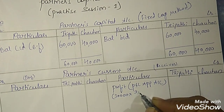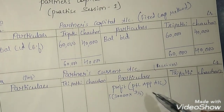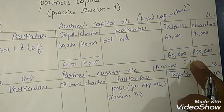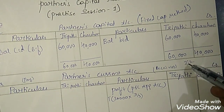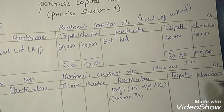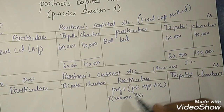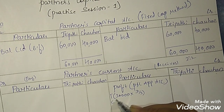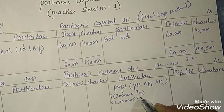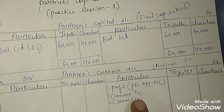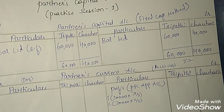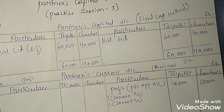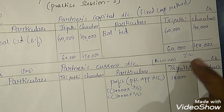The profit is Rs. 30,000, to be distributed in the ratio 3:2. For Tripathi: 30,000 × 3/5, and for Chauhan: 30,000 × 2/5. The ratio is 3:2, so 3+2=5. If we divide the profits into 5 parts, 3 parts belong to Tripathi and 2 parts to Chauhan. Simplifying, we get Rs. 18,000 for Tripathi and Rs. 12,000 for Chauhan. This is how you distribute profits in their ratio.